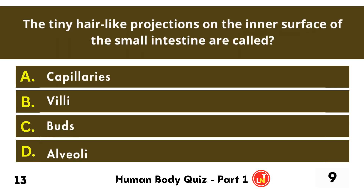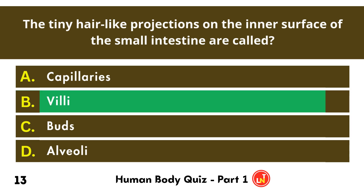The tiny hair-like projections on the inner surface of the small intestine are called villi.